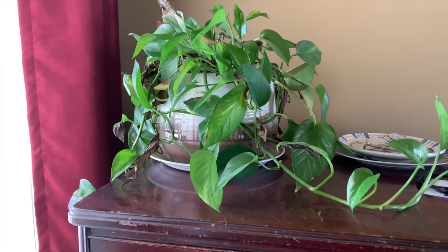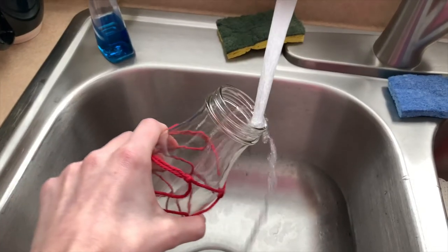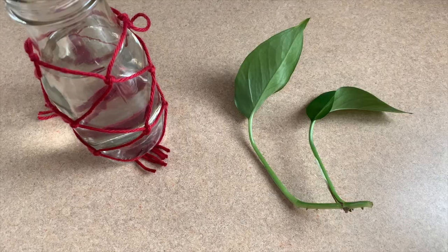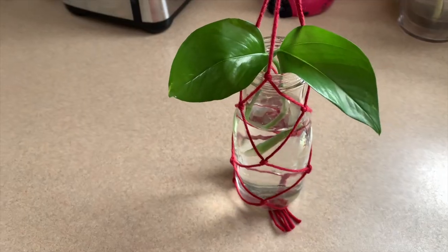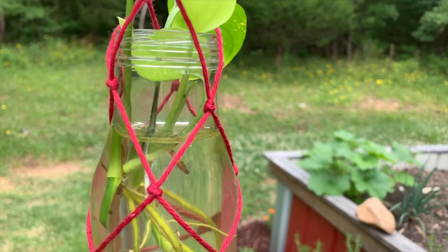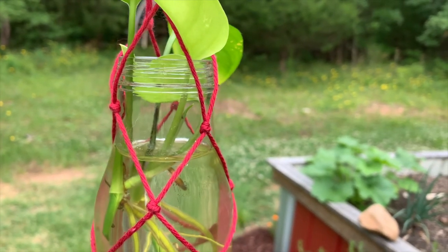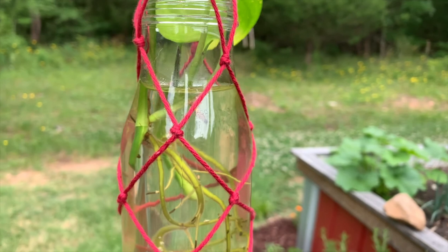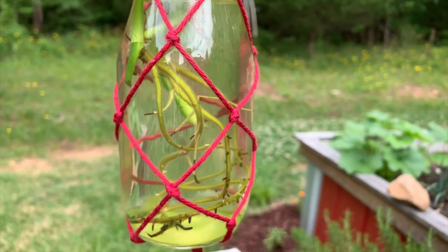I decided to root some ivy in my jar. I took two clippings from my mom's pothos ivy, filled my jar with water, and placed the clippings in the water in a sunny spot. A few tiny roots popped up after just a few days, and now two months later I have lots of roots and even new leaves. I still haven't decided where to permanently hang this jar, but I definitely want to make more.